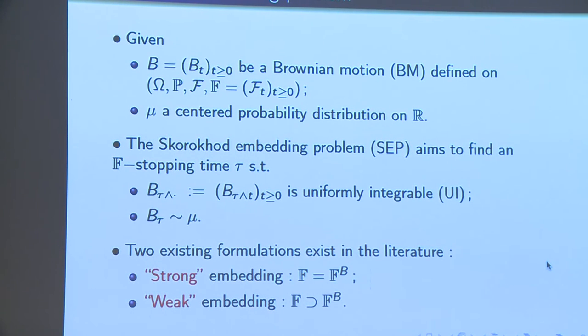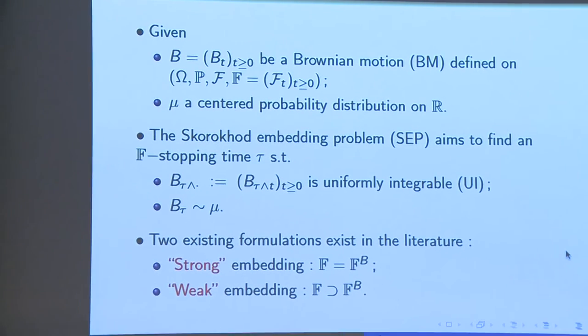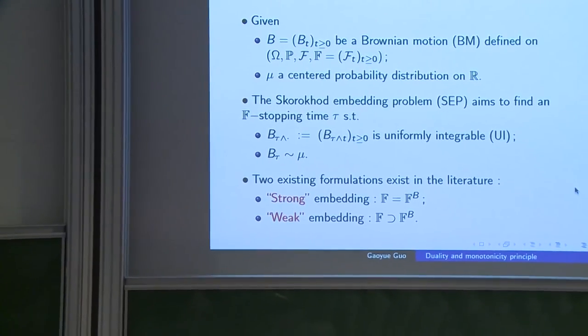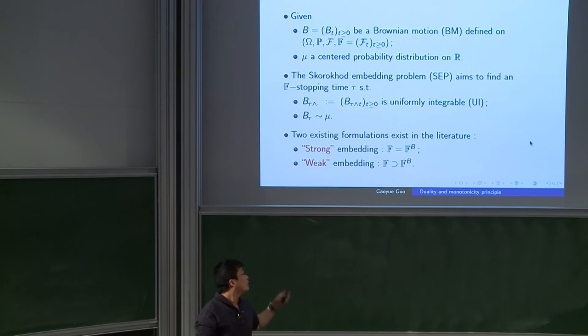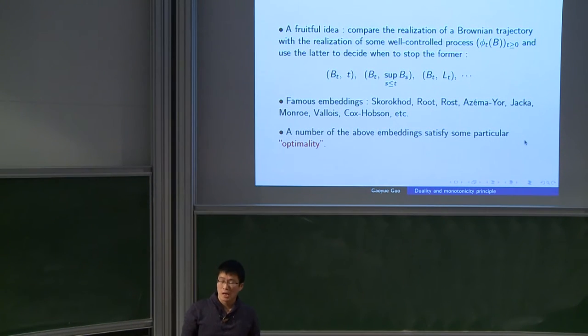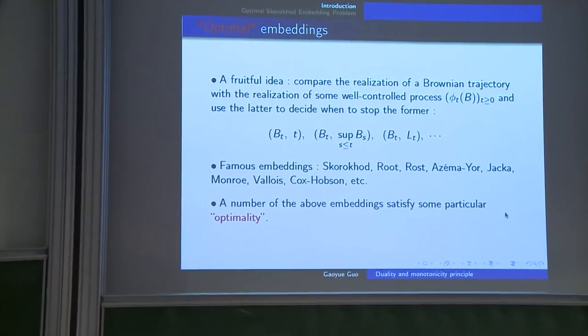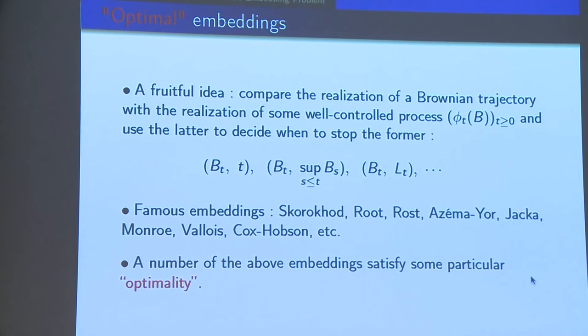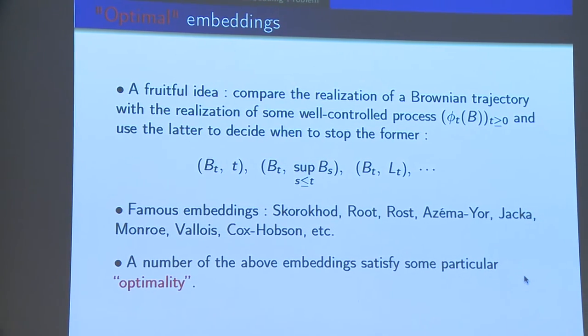Roughly speaking, there are two formulations of the problem in the existing literature. In the first one, we seek the stopping time with respect to the Brownian filtration. I mean, the filtration F is a natural filtration generated by the Brownian motion. In the second one, we introduce some additional randomness and we consider a larger filtration for the stopping times.